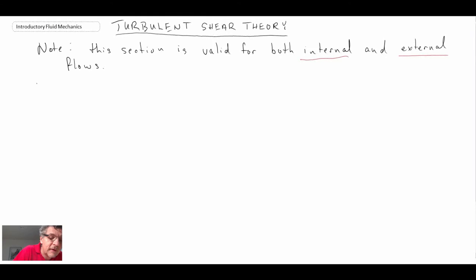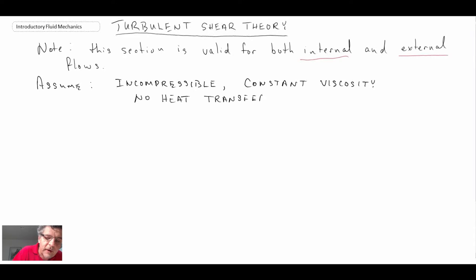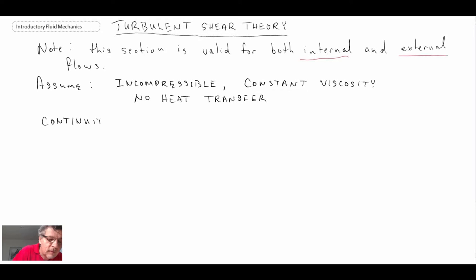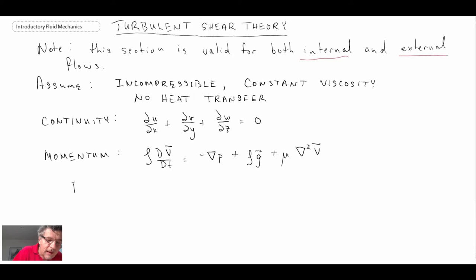We're going to make a couple of assumptions. In our analysis we're going to assume that the flow is incompressible, there's constant viscosity, and no heat transfer. And we're going to begin with the governing equations — continuity and momentum — as well as boundary conditions. The boundary conditions that we apply are no-slip at the walls and no inlet and exit conditions.